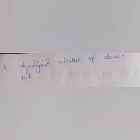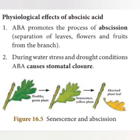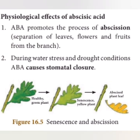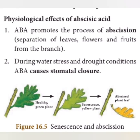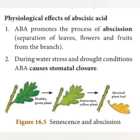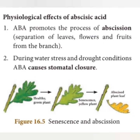The next question is the physiological activity of abscisic acid. What is abscisic acid? It is one type of plant hormone. It promotes abscission. Abscission is the separation of leaf, flower, and fruits from the branch. It is also involved in stomatal closure during stress or drought conditions.